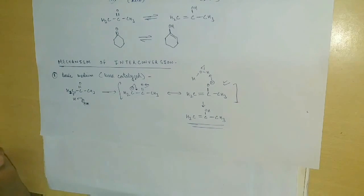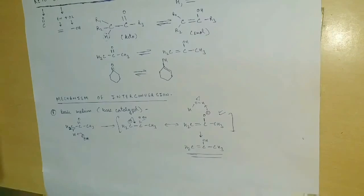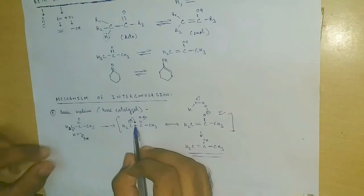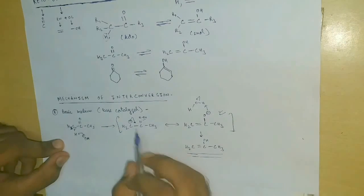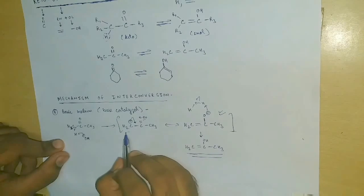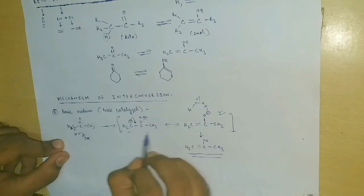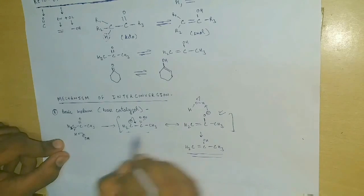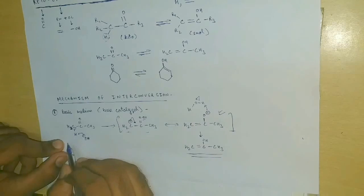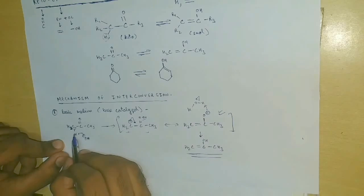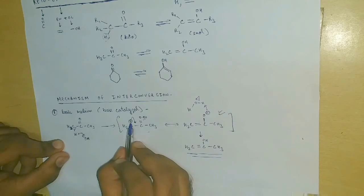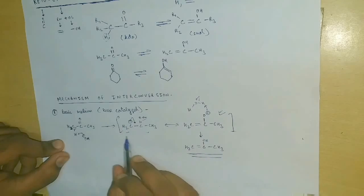Here we can note that the reaction involved a carbanion as intermediate, the stability of which depends on the acidic strength of the alpha hydrogen. That means higher the acidity of this alpha hydrogen, higher is the stability of this carbanion, and higher is the chance that it will be involved as an intermediate in the interconversion.